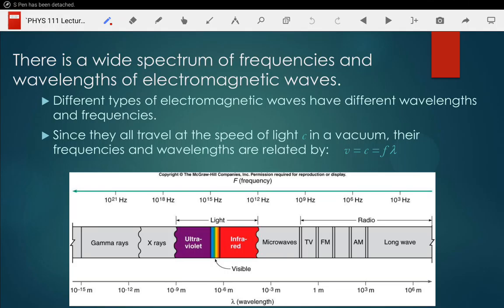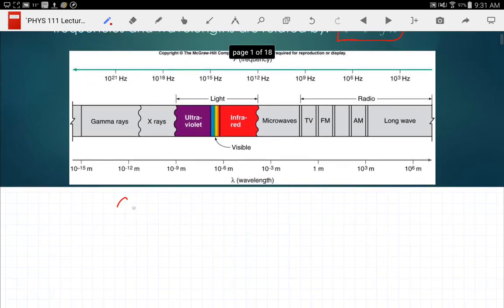So we're going to continue talking about light. We had this slide at the end of the last class period talking about the spectrum of light and this very important relationship that the speed of light is equal to the frequency multiplied by the wavelength. The speed of light in vacuum is the special value. We give it the symbol C, and that speed of light in vacuum is 299,792,458 meters per second.